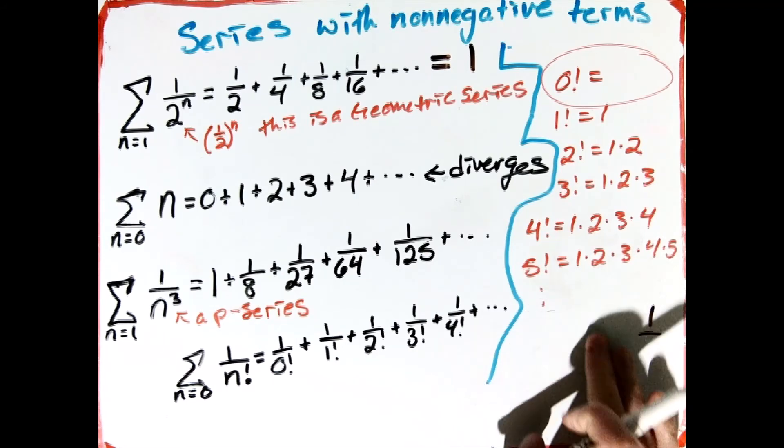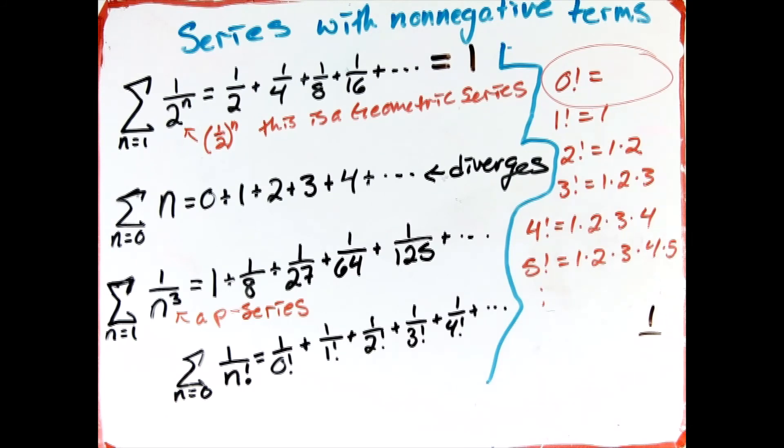For two objects, I'd have one of two choices, and then I'd be stuck. If I just have one object, I can only permute it one way. But what if I don't have any objects? How many ways are there to permute zero things?